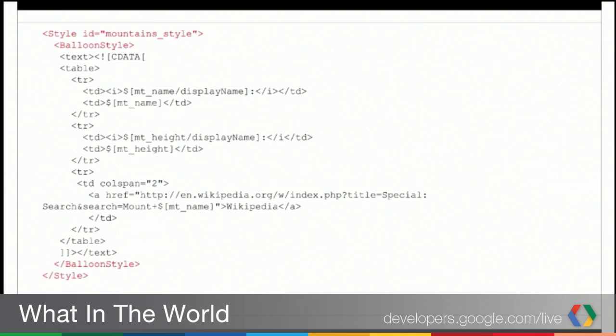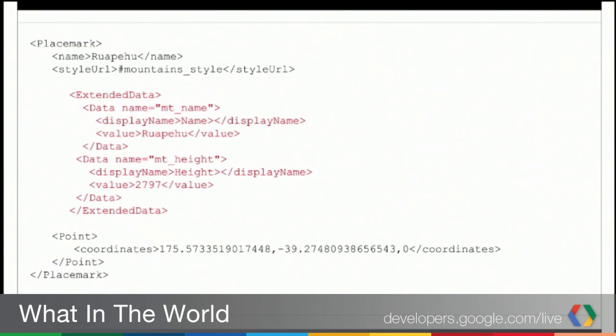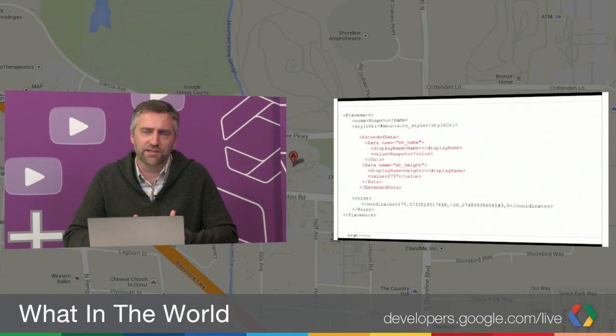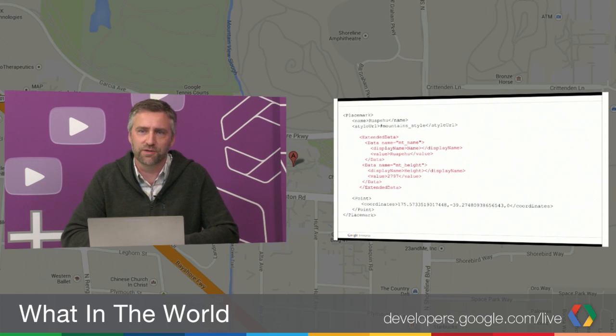Here's some KML showing the balloon style I just briefly mentioned — you can see some placeholders in there with square brackets. That data is going to get populated from our placemark. So you can see we've got an extended data field with a data name, a display name, and a value — and also for the height, a display name and a value. So it's structured. And you're only defining that display style in one place, so you're not replicating the display style for every single placemark. With the classic method, if you wanted to change the format of the table, you'd have to change every single placemark. With this approach, you just change it once and it ripples through for every single change.